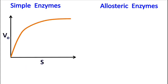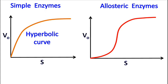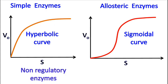Simple enzymes show a hyperbolic curve, whereas allosteric enzymes show a typical sigmoidal curve. Simple enzymes are also termed as non-regulatory enzymes, while allosteric enzymes are termed as regulatory enzymes.